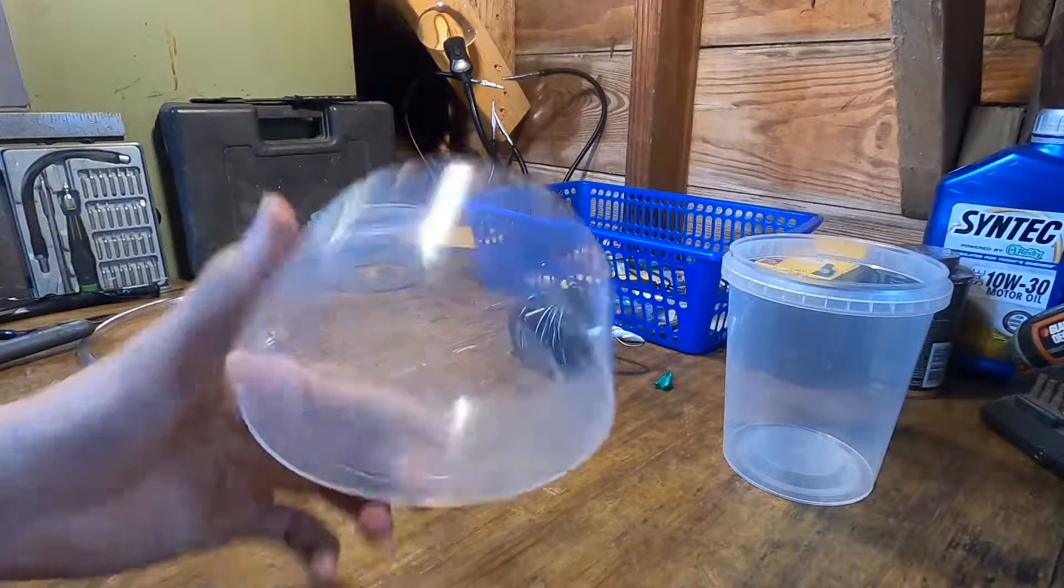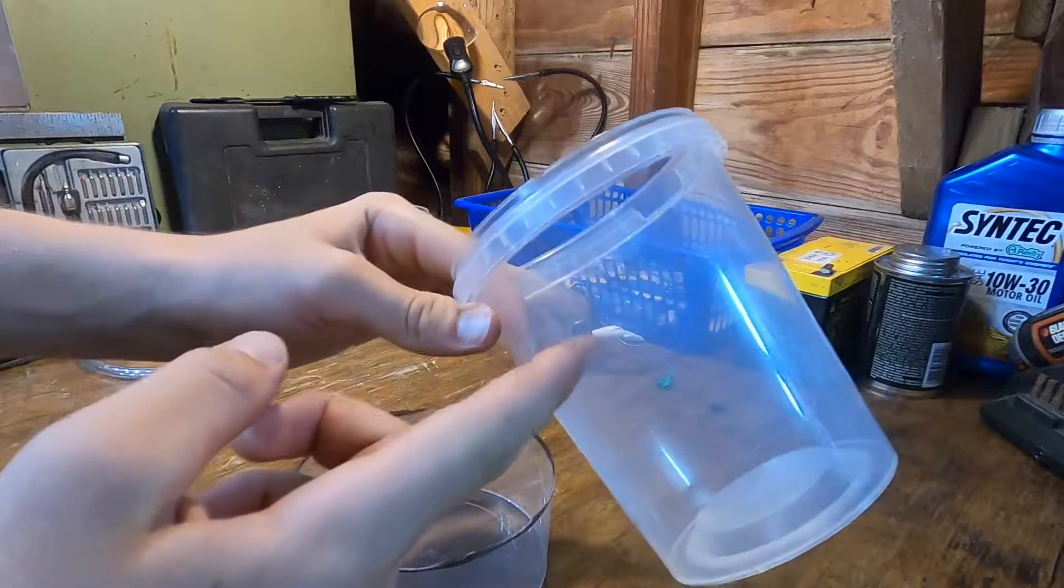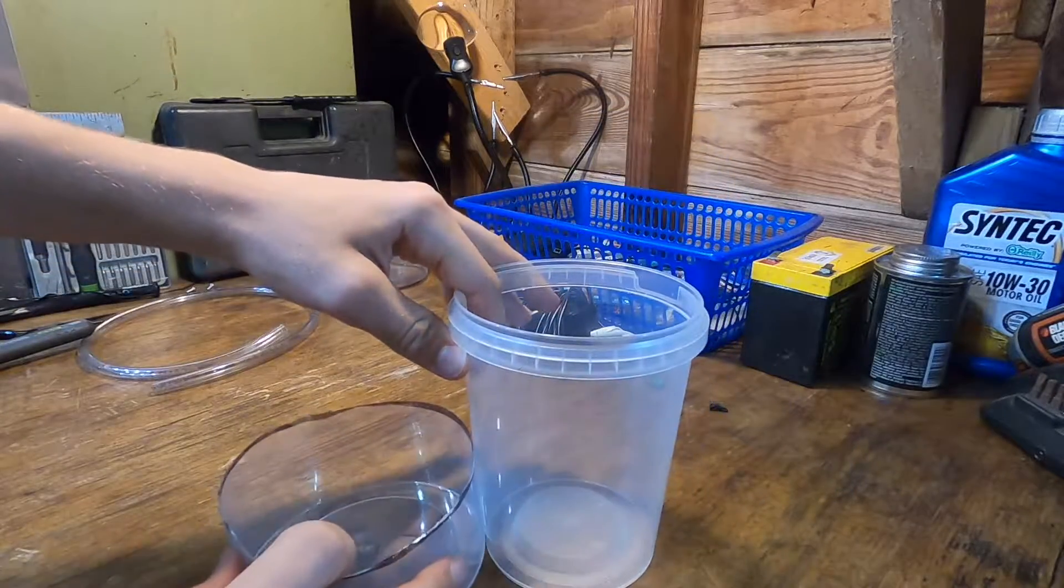So there we go. We got the bottom dish here. Now what we're going to do is we're going to chop off the other one right about here. And then we'll be able to put that right behind it.